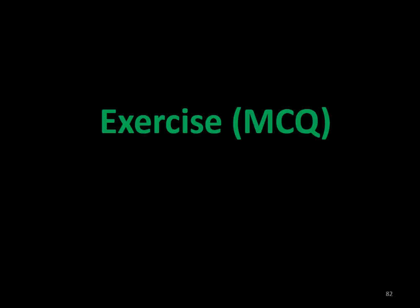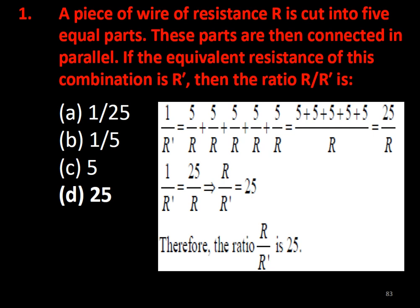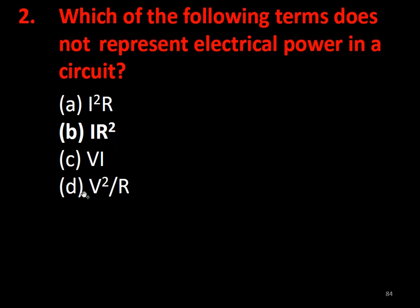Problem 1: A piece of wire with resistance R is cut into five equal parts (each part has resistance R/5). These five parts are connected in parallel. Then 1/Rₚ = 5/(R/5) = 25/R, so Rₚ = R/25. The ratio of the original resistance to the new equivalent resistance is R : R/25 = 25:1. The answer is 25 (option D).